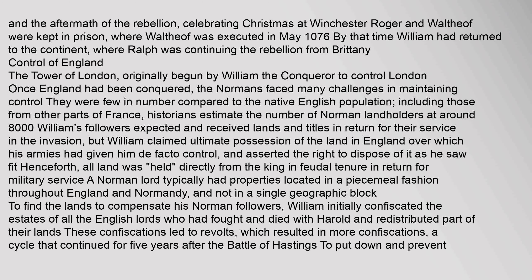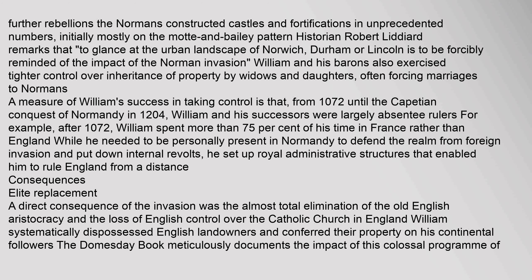The Tower of London was originally begun by William the Conqueror to control London. Once England had been conquered, the Normans faced many challenges in maintaining control. They were few in number compared to the native English population. Historians estimate the number of Norman landholders at around 8,000. William's followers expected and received lands and titles in return for their service in the invasion, but William claimed ultimate possession of the land in England and asserted the right to dispose of it as he saw fit. Henceforth, all land was 'held' directly from the king in feudal tenure in return for military service. To find lands to compensate his Norman followers, William initially confiscated the estates of all the English lords who had fought and died with Harold. These confiscations led to revolts, which resulted in more confiscations, a cycle that continued for five years after the Battle of Hastings.